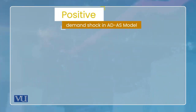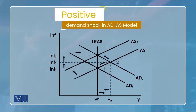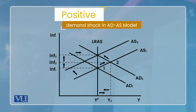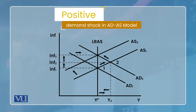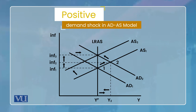Ab jab positive aggregate demand shock aapki economy mein aaye - jab bhi kahoon aggregate demand shock - is ka meaning aapke zehan mein clear ho: ya to consumption ka autonomous part change hua hai, ya investment ka, ya net exports ka, ya financial frictions kam hui hain, ya taxes kam hue hain, ya central bank ne interest rate kam kar di hai. In mein se kuch bhi ho jaaye, ye diagram un sab ke liye relevant hai.